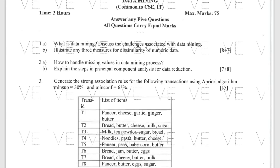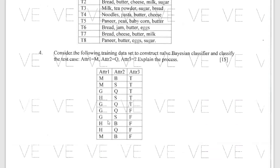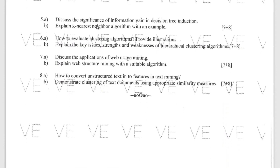What is data mining, the challenges associated with data mining, and the three measures of dissimilarity of numeric data are here. Next, there is an example question for the Apriori algorithm, how to construct the Naive Bayes classifier, the KNN algorithm, and information gain. A few questions have been given under hierarchical clustering algorithms, and applications of web usage mining, web structure mining, and text mining are also included.